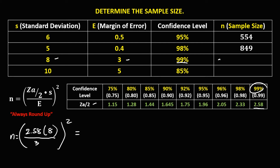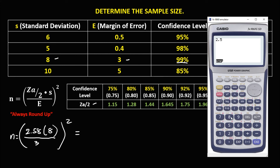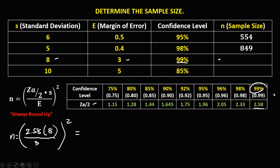To solve for this sample size: 2.58 times 8, divided by 3, then to the power 2. That's 47.33. Since we always round up, the sample size is 48.